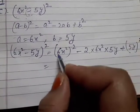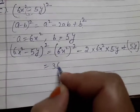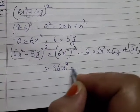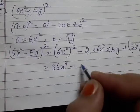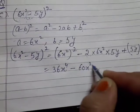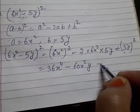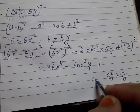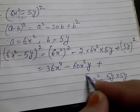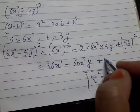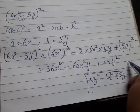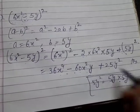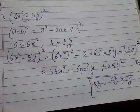So it becomes: 6x² squared is 36x⁴, minus 2 × 6 × 5 = 60, giving minus 60x²y, plus (5y)² which is 25y². So our answer is 36x⁴ - 60x²y + 25y².